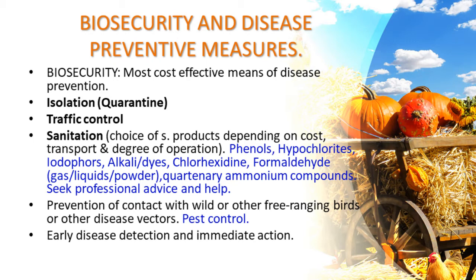Under biosecurity there are three major arms: the first is isolation, the second is traffic control, and the third is sanitation. Starting with sanitation — the choice of sanitation products depends on cost, transport, and degree of operation.